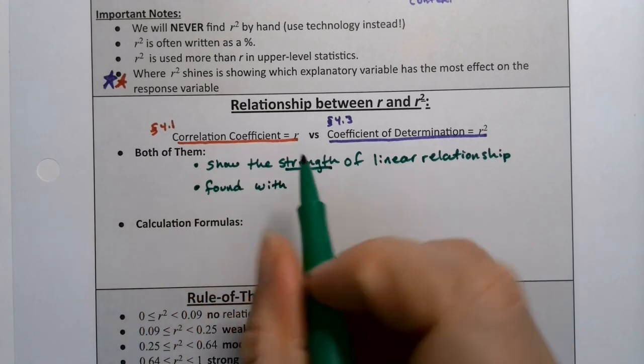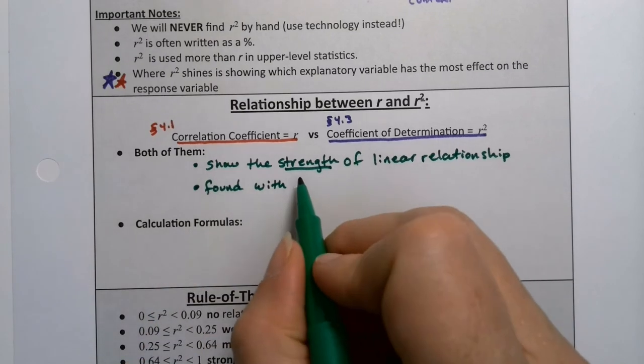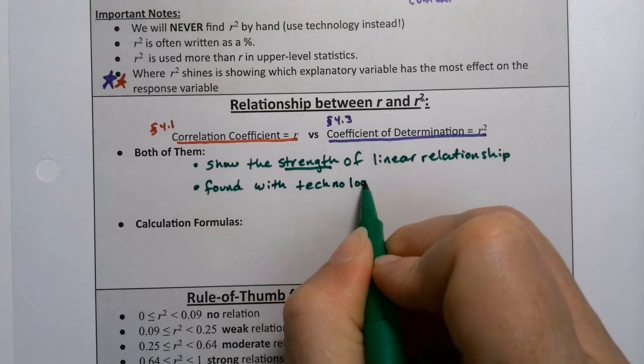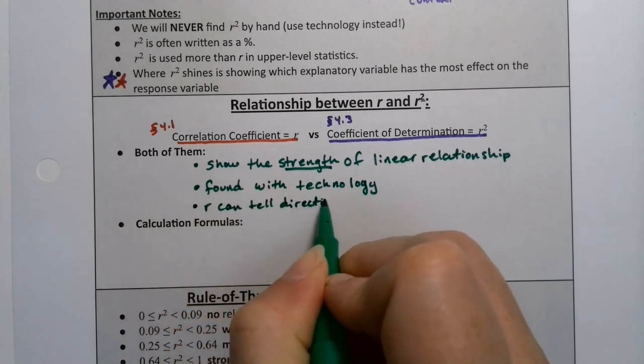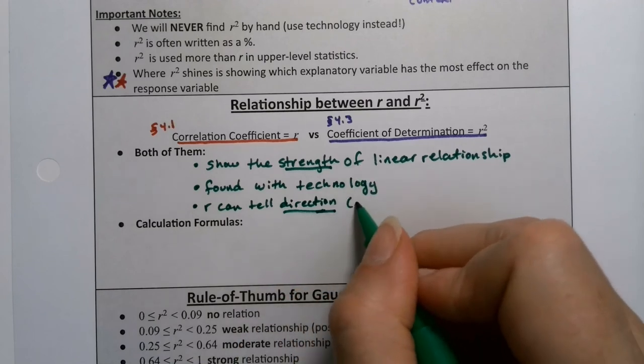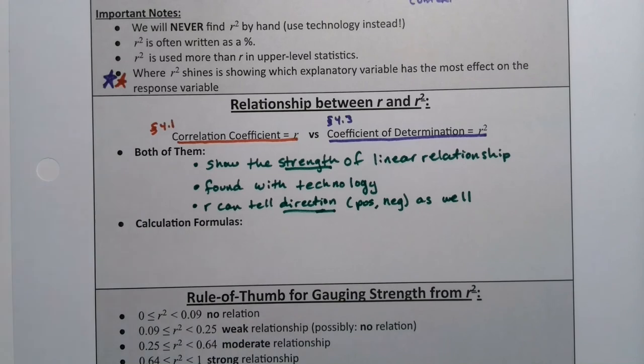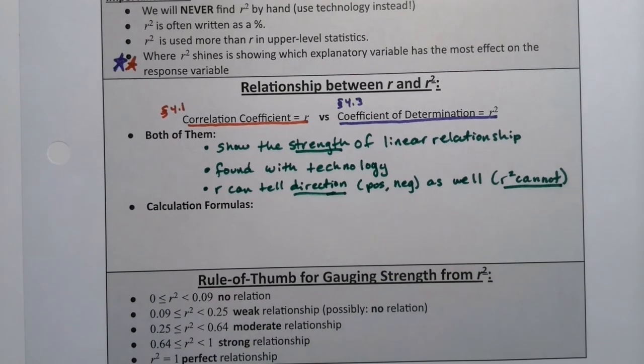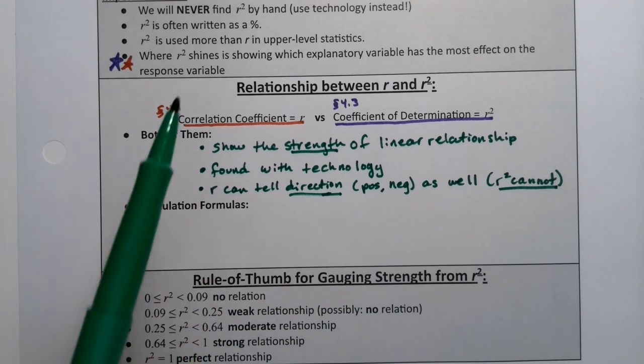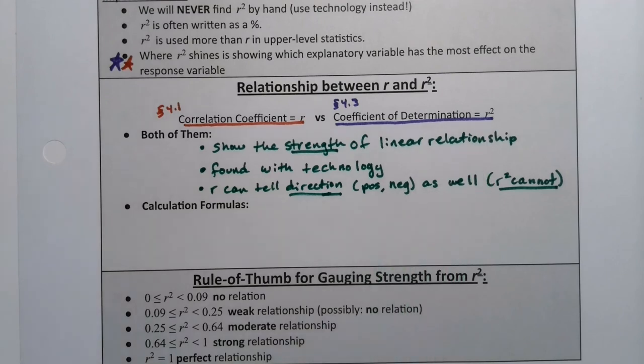Now, they're only going to tell you strength, because the coefficient of determination cannot tell you direction. Remember, the correlation coefficient can give direction. It can tell you positive and negative as well. But the coefficient of determination cannot. Direction being positive or negative. I better make a note. R squared cannot. R squared cannot tell you whether it's positive or negative. It can only tell you the strength. But if you're thinking, look at those letters, r and r squared. I wonder if there's a relationship. The answer is, oh, yes. It is exactly what you think it is. R squared is r, the correlation coefficient, squared. Simple as that.